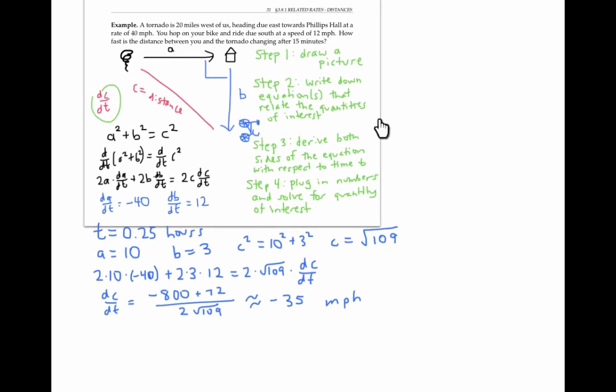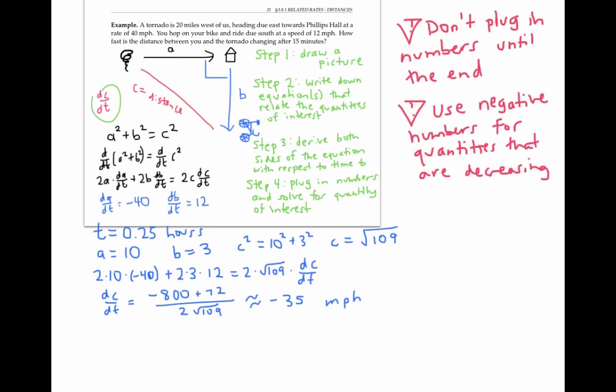These same steps will get you through a variety of related rates problems. A couple cautionary notes. Don't plug in numbers too soon. Any quantities that vary with time should be written as variables so you can properly take the derivatives with respect to time. In addition, be careful to use negative numbers for negative rates of change. That is, for quantities that are decreasing. We wouldn't have gotten the right answer if we hadn't used a negative 40 for the rate of change of the distance here.